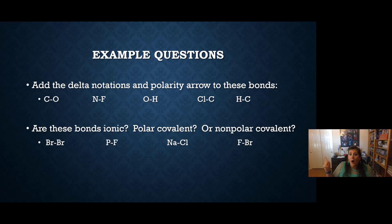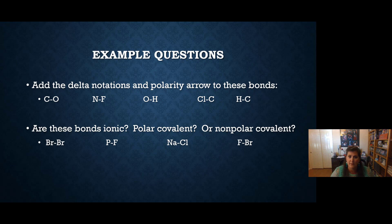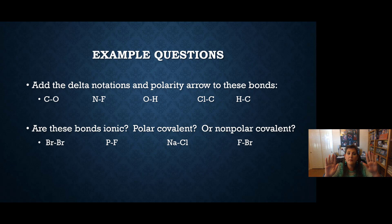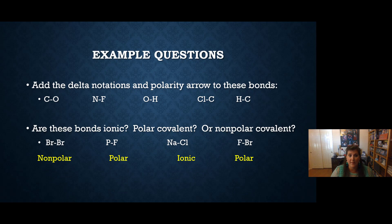Next question: are these bonds ionic, polar covalent, or nonpolar covalent? Br-Br: nonpolar — you're bonded to yourself, so nonpolar covalent. P-F: polar covalent — two different nonmetals. Na-Cl: that has a metal, so it's ionic — a metal and a nonmetal makes ionic. F-Br: polar covalent.